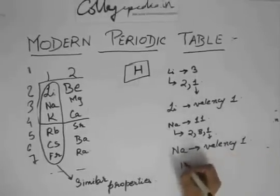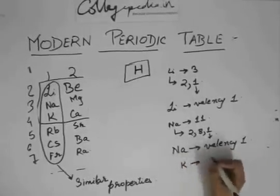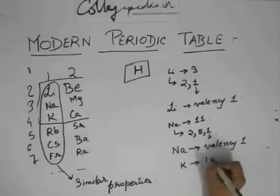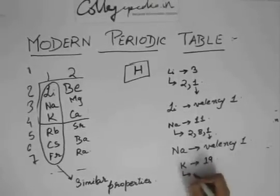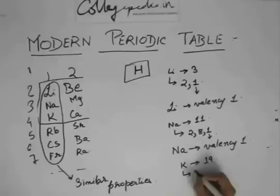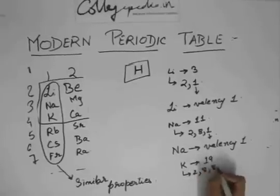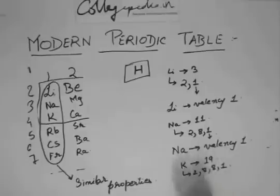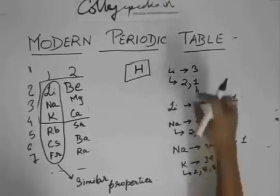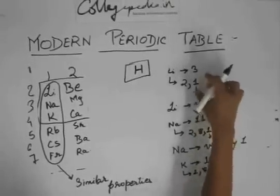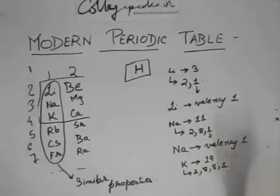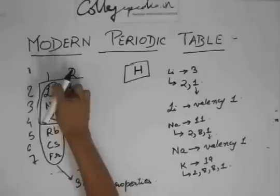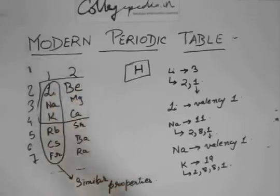Then again, if you would have noticed — sodium, potassium — potassium will have atomic number 19 and its electronic configuration will be 2,8,8,1. So if you would have noticed, there is always one electron in the outermost shell of lithium, sodium, and potassium.